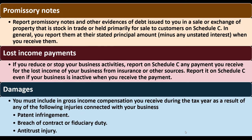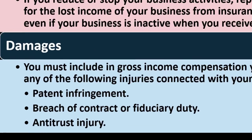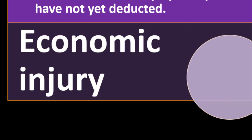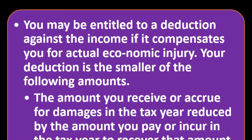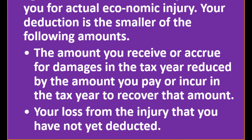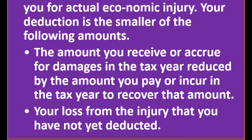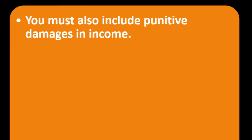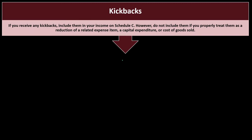You must include in gross income compensation you receive during the tax year as a result of the following injuries connected with your business: patent infringement, breach of contract or fiduciary duty, antitrust injury, or economic injury. You may be entitled to a deduction against that income if it compensates you for actual economic injury. Your deduction is the smaller of: the amount you receive or accrue for damages in the tax year reduced by the amount you pay or incur to recover that amount, or the loss from the injury that you have not yet deducted.